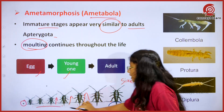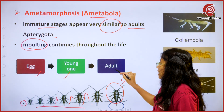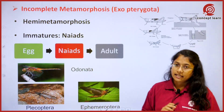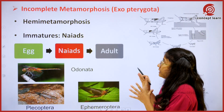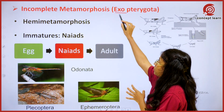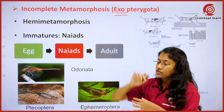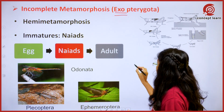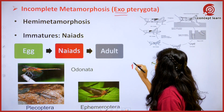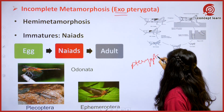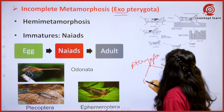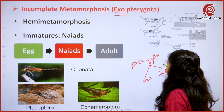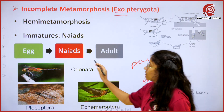Now let's see what is meant by incomplete metamorphosis. Incomplete metamorphosis includes the Exopterygota. These Exopterygota and Endopterygota come under the Pterygota — under Pterygota, both Exo and Endo are present.